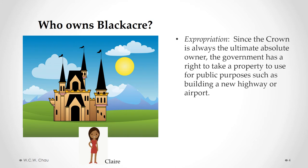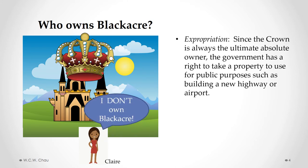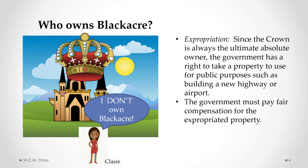With a fee simple estate, the ultimate owner is still the Crown. Because of that, the government — either provincial or federal — has a right to take a property to use for public purposes, and that's called expropriation. They might need the property to build a new highway or airport. When the government decides to expropriate a piece of property, the owner — Claire in this case — would have no choice but to give up the property. However, the government has an obligation to pay fair compensation for the expropriated property.